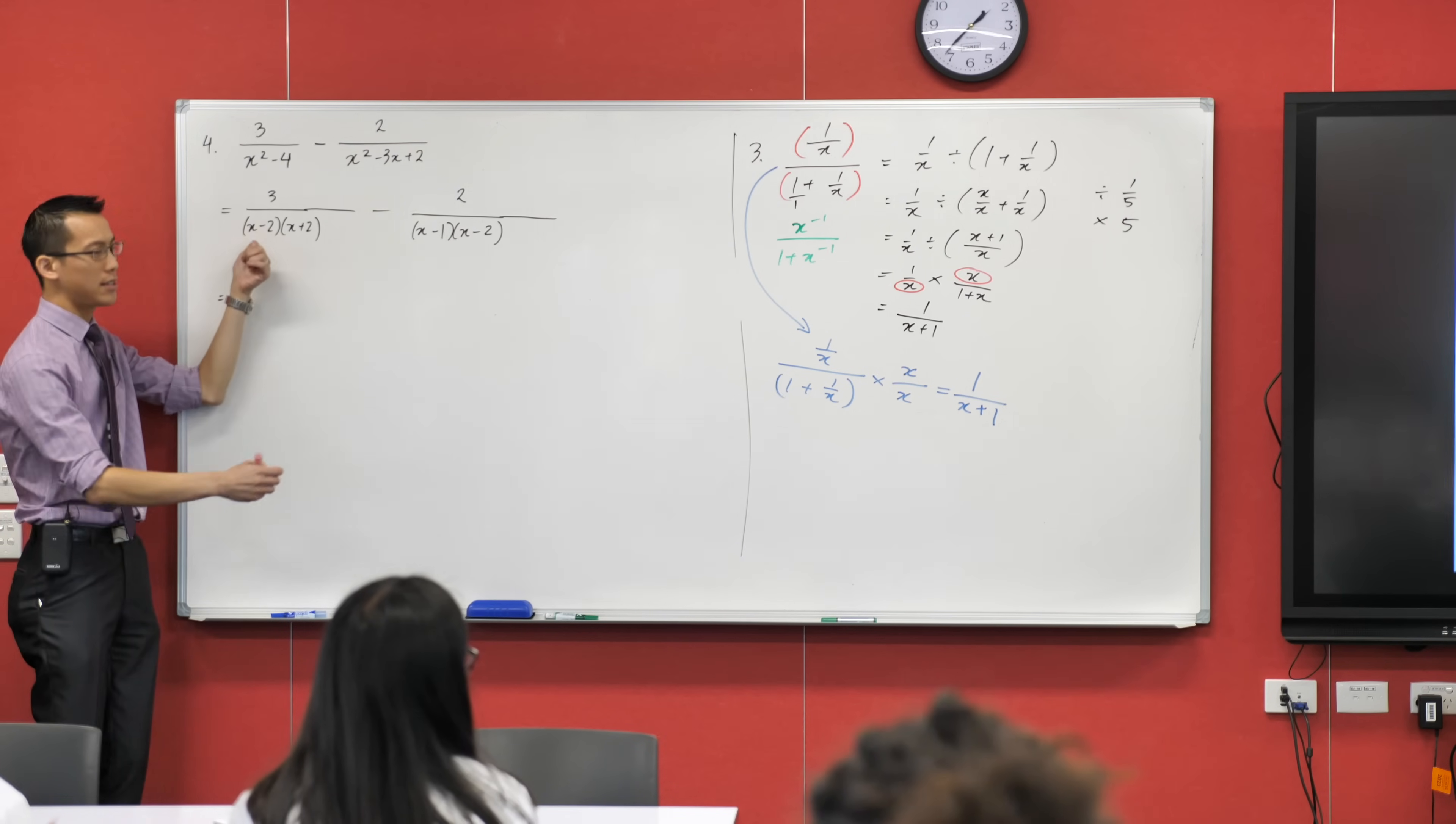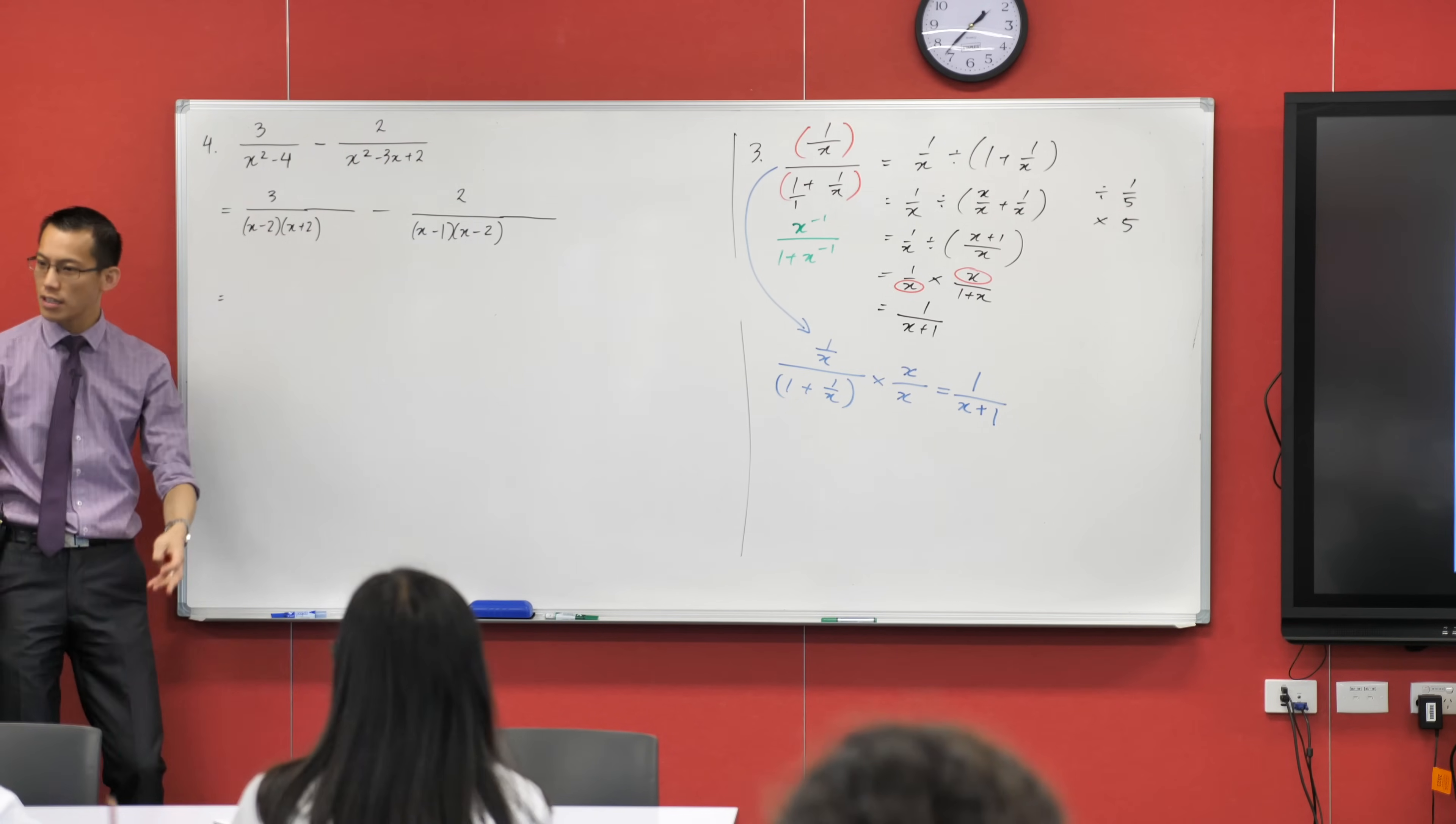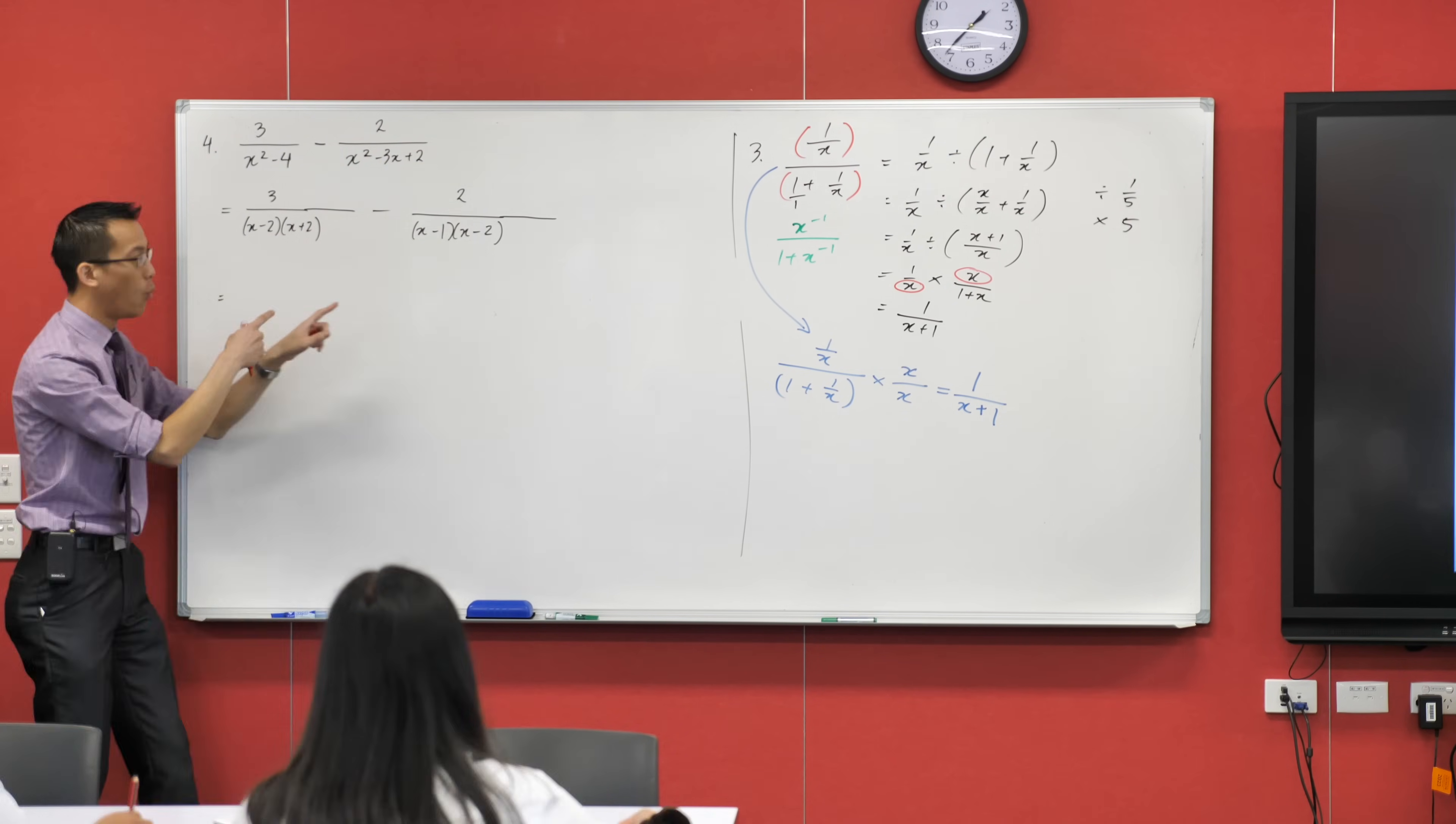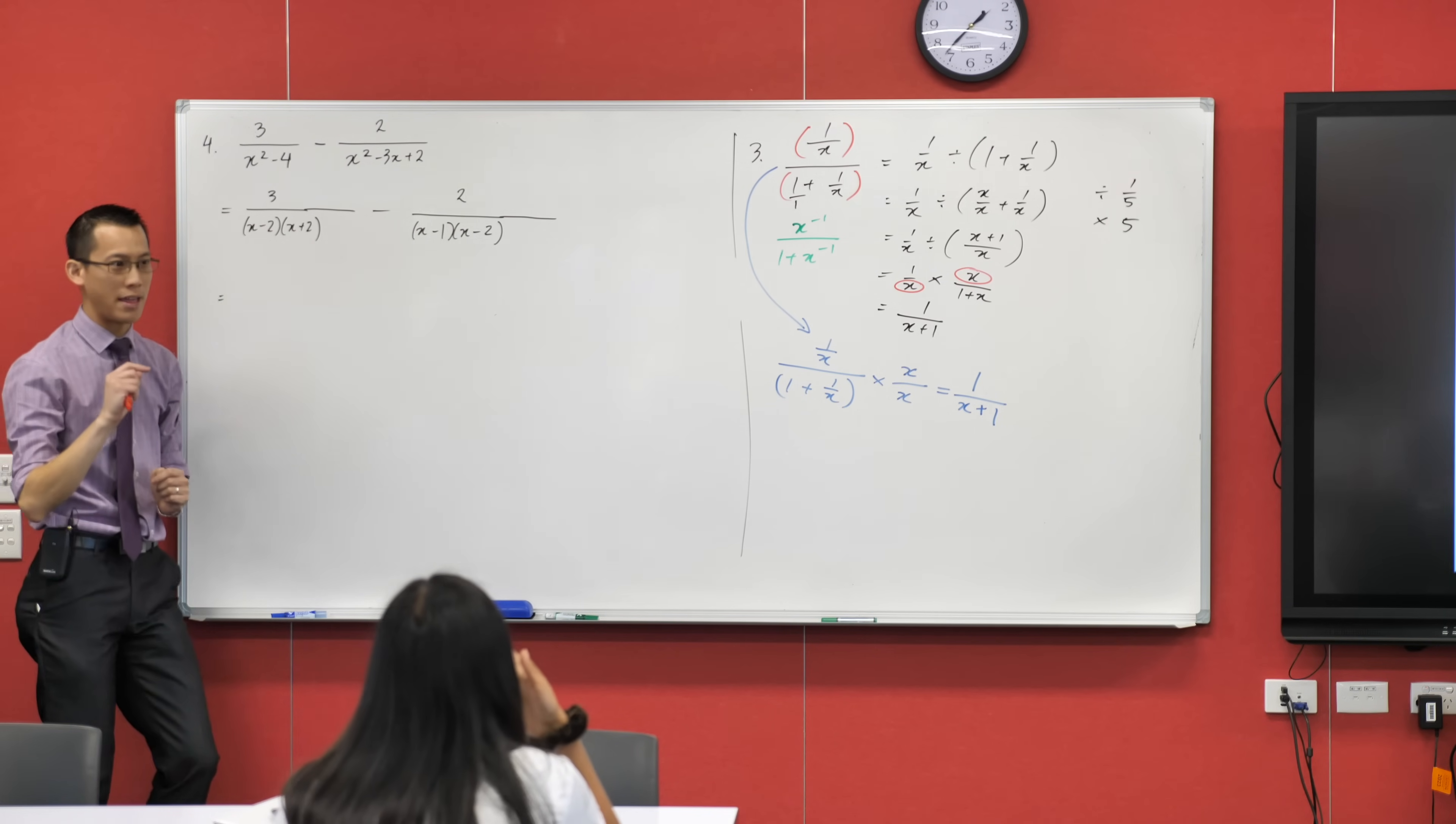So I can see I already have this common factor on both denominators, x minus 2, so I don't need to multiply this guy by x minus 2 because of this, I already have it. What do I need? What is the missing term that's going to be multiplied on the top and the bottom?